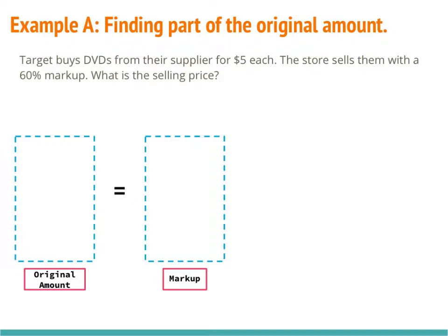First, we need to talk about the original amount, which is $5 for the DVDs, and that's going to be 100% of the price. Anytime you have the original amount, that's 100% of the thing you are buying. On the other side, I'm going to have my markup, which is 60%. So notice I have my two percents across from each other — 100% on the bottom and 60% on the bottom. Since my percentages are across from each other, my money goes on top: $5 on one side, and x for the unknown markup amount on the other.